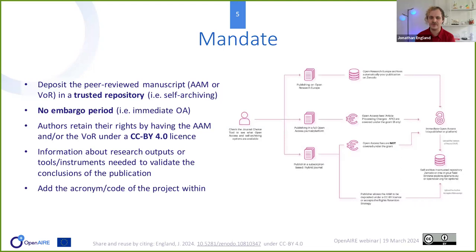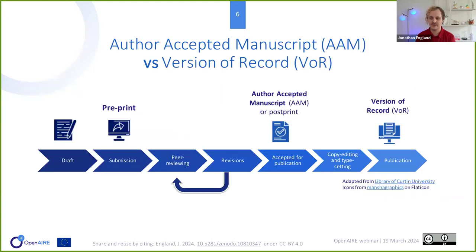One of the big differences from H2020 is that there is no embargo period allowed. You have to make your work available in open access immediately upon publication. You have to retain your rights by applying a Creative Commons license on one of the versions of your manuscript. You also need to add information about research outputs to validate the conclusions, and don't forget to add the acronym and grant code of the project within each publication.